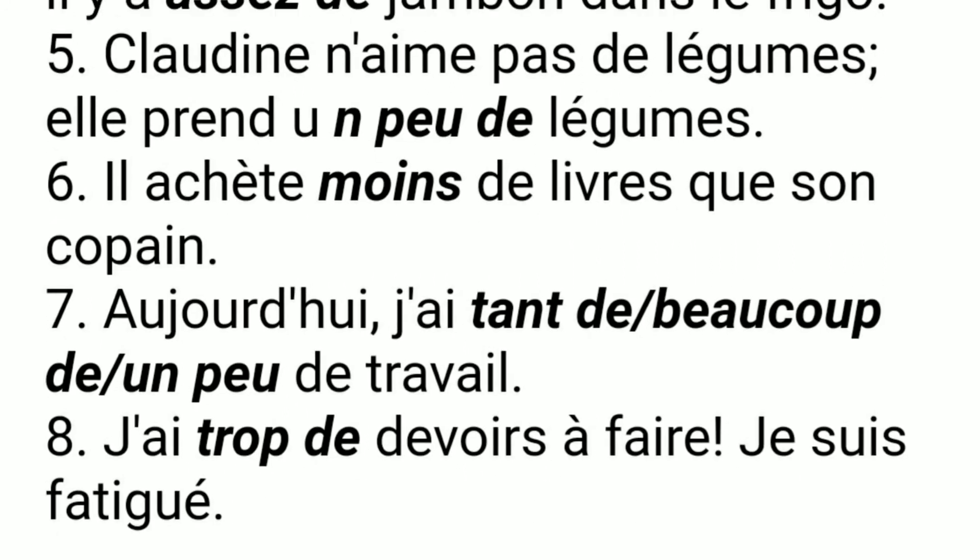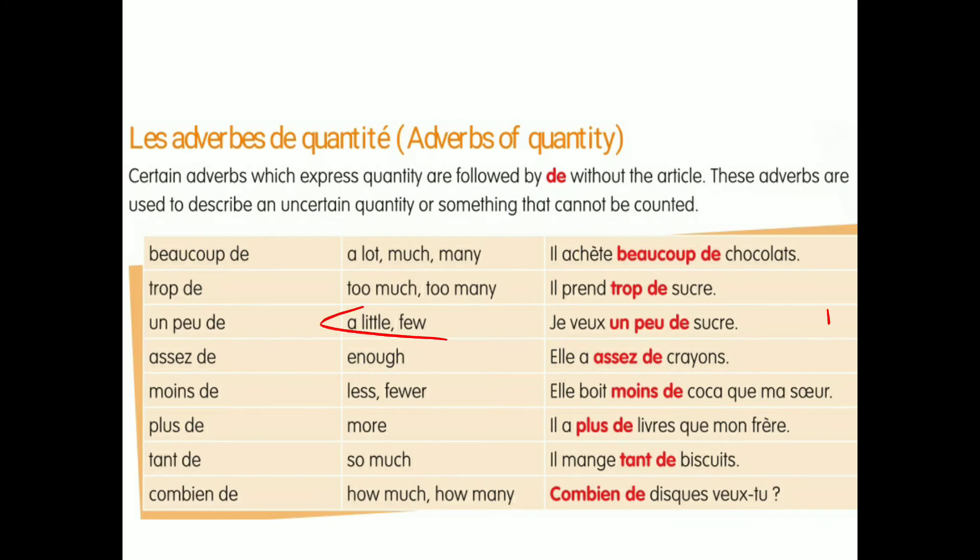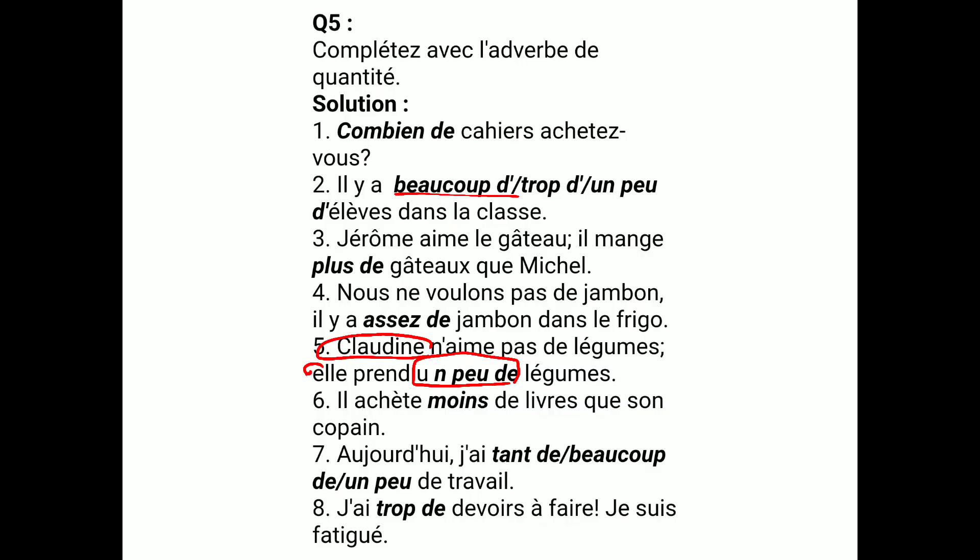Next: Claudine n'aime pas les légumes. Elle prend un peu de légumes. That means there's a person named Claudine — she is feminine as 'elle' is used. She does not like vegetables, so she eats less vegetables. Un peu de means less or a little.